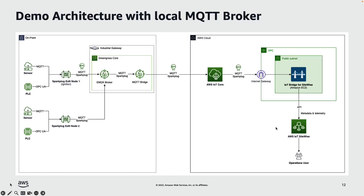In this walkthrough, we'll start building these architecture blocks and then see the end-to-end data flow from a Sparkplug device all the way to AWS IoT SiteWise. First, we need to create IoT things to represent entities like Edge of Network Node, Industrial Gateway, and the IoT Bridge for SiteWise.